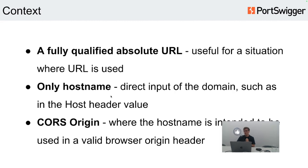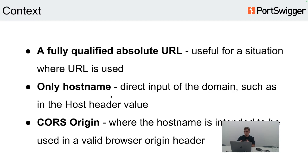A fully qualified absolute URL is useful when you have the full string — usually a request parameter, a Referer header, or any other type of header. Hostname speaks for itself — it's usually the host header or where you can submit a domain name. CORS is the type of payloads that will only be valid CORS origin values, so you can't send anything the browser wouldn't send.